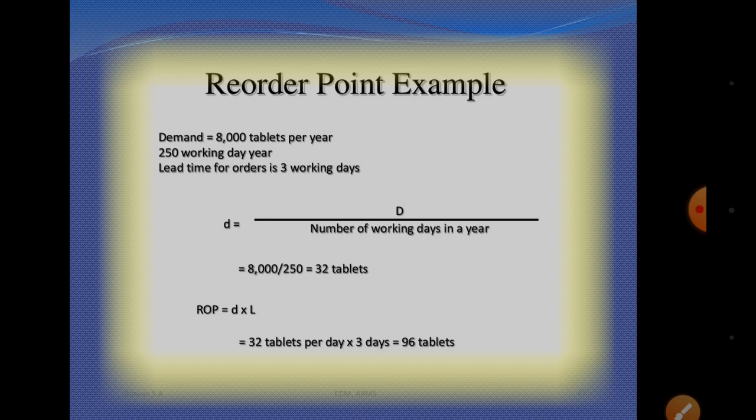For example, suppose demand is 8,000 tablets per year with 250 working days in a year, and lead time for the order is three working days. Small d equals capital D divided by number of working days in a year. Capital D is demand, which is 8,000 tablets, so 8,000 divided by 250 equals 32 tablets per day. Therefore, small d equals 32 tablets per day.